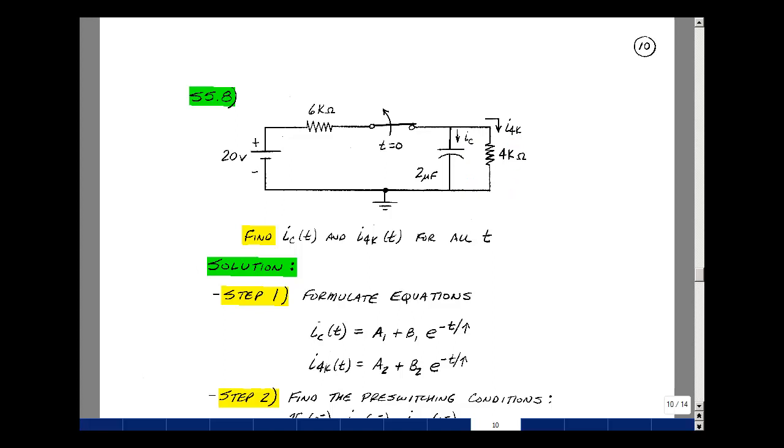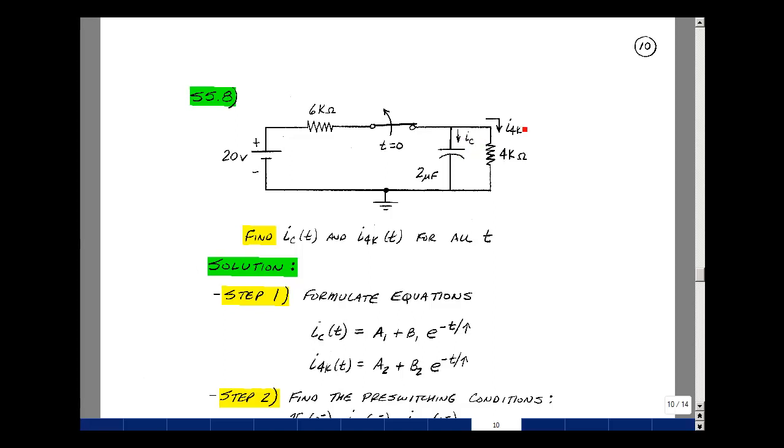Since we have a one capacitor circuit with a switch, we can use our six-step algorithm. The first step is to formulate the equations. We're going to solve for I sub c of t and I sub 4k of t, and that's going to be the form of a first-order differential equation solution: A plus B times e to the minus the quantity t minus t zero divided by tau. Here t zero is equal to zero. Because I have two currents to solve for, I'll use a subscript one and two.